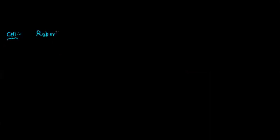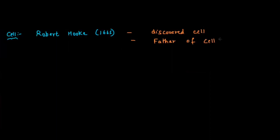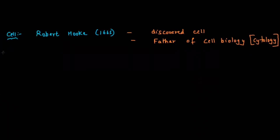The cell was discovered by Robert Hooke in 1665. Robert Hooke was the first scientist ever to talk about the cell, and therefore he is also known as the father of cell biology, or cytology. However, the problem is that Robert Hooke discovered dead cells.